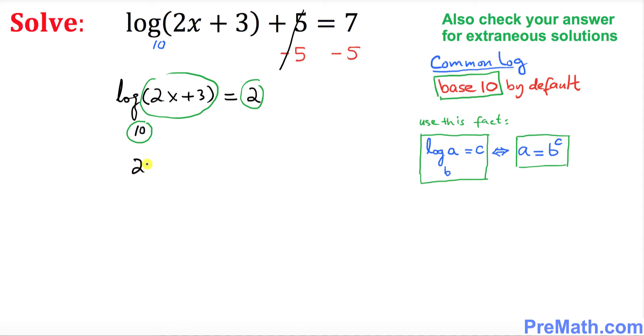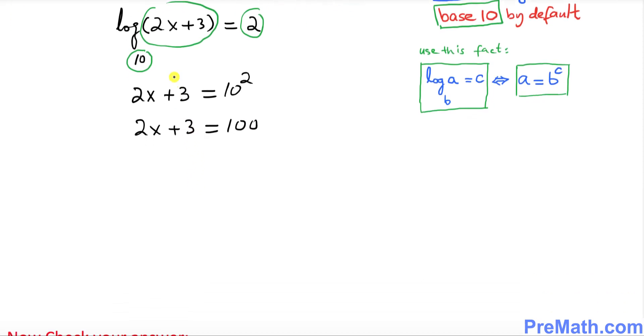So that could be written as 2x plus 3 equals 10 to the power of 2. So 2x plus 3 equals 10 to the power of 2, which is 100. Now we want to solve for x, so I want you to subtract 3 from both sides.